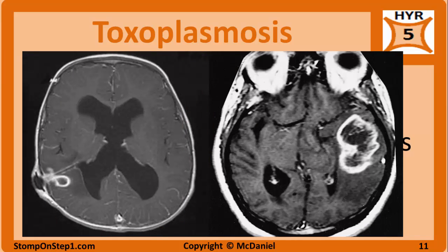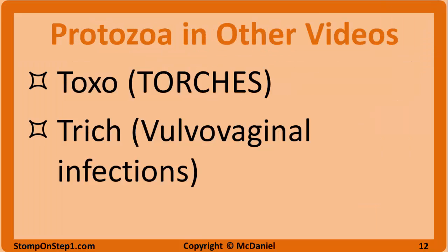Due to copyright limitations, an actual picture of Toxo is not shown, but examples of other diseases that cause ring-enhancing lesions are provided. Toxoplasmosis can cross the placenta and affect the fetus, but this topic will be discussed in a separate video covering the TORCH infections. Trichomonas will also not be covered here — it will be addressed in an entire video about vulvovaginal infections.